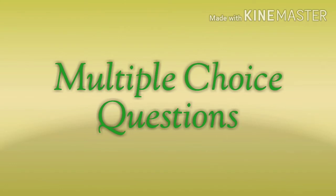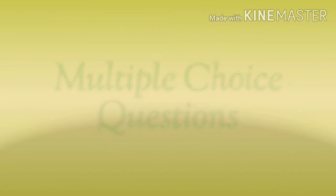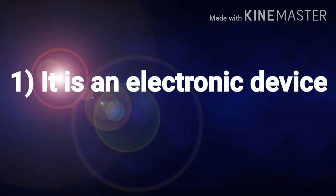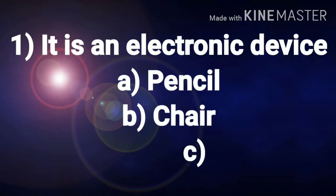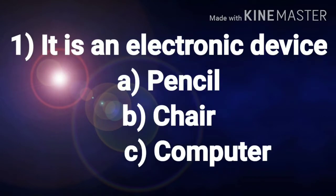So let us begin with Exercise A, multiple choice questions. Number 1: It is an electronic device. Options are pencil, chair, computer. So the right answer is computer.